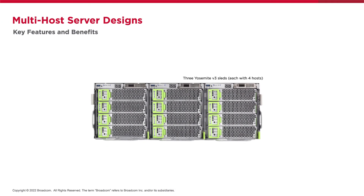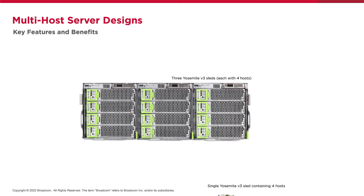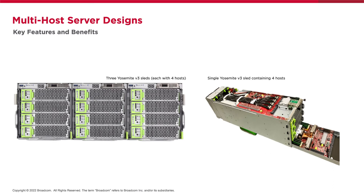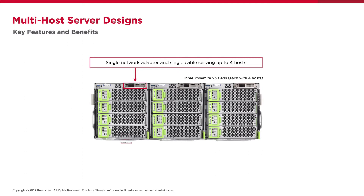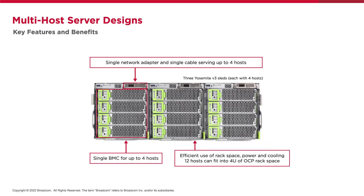Here we have a picture of a shelf or cubby containing three multi-host sleds. The chassis which holds the NIC and hosts that share that NIC is referred to as a sled. At the top of each sled we have a single NIC, and below each NIC we have four trays, each containing a completely independent host server. There is also a single BMC within the sled, which can manage the sled and each host. In this example of a 4U sized OCP cubby, we have twelve independent servers, managed by three BMCs, and connected by only three NICs and three cables to three switch ports. This is a pretty efficient use of rack space, power, and cooling.